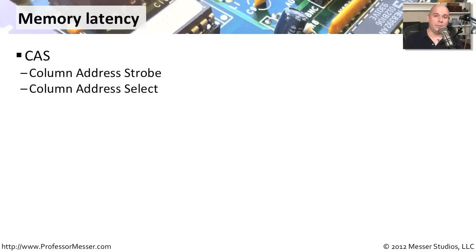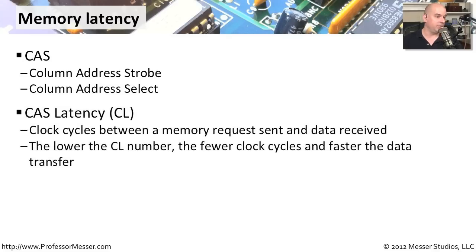When purchasing or upgrading memory, another thing you'll find is a latency number, usually referred to as a CAS number, which stands for Column Address Strobe, sometimes Column Address Select. The specification is abbreviated with CL for CAS latency. This is the number of clock cycles between when a request is made to the memory to when you start getting data back. The lower the number, the less latency and the faster the communication.